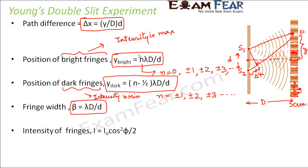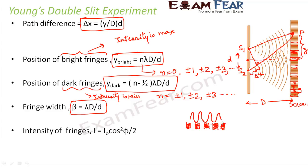Now we discuss the intensity of the fringes. We have alternate dark and bright bands — bright fringes have maximum intensity and dark fringes have minimum intensity. The intensity at any point, when two waves superimpose, is given by I equals I1 plus I2 plus 2·sqrt(I1·I2)·cos(phi), where phi is the phase difference.